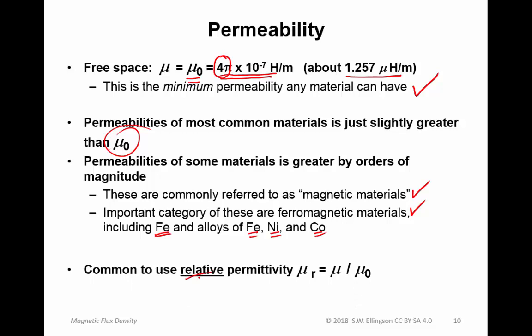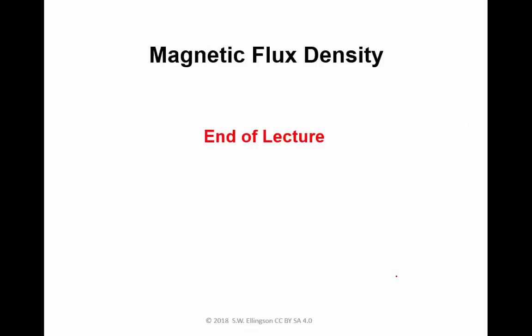Just as in the case of permittivity, we frequently refer to relative permeability — the actual permeability divided by that of free space. Most materials have a relative permeability of about 1, or very slightly greater than 1, while ferromagnetic materials have relative permeabilities much greater than 1. That concludes this lecture on magnetic flux density.